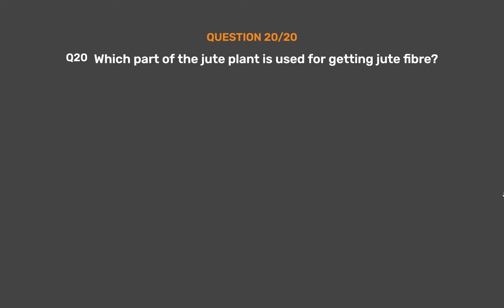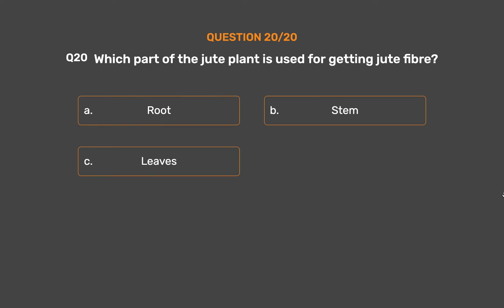Question number 20. Which part of the jute plant is used for getting jute fiber? Option A, Root; Option B, Stem; Option C, Leaves; Option D, Flower.